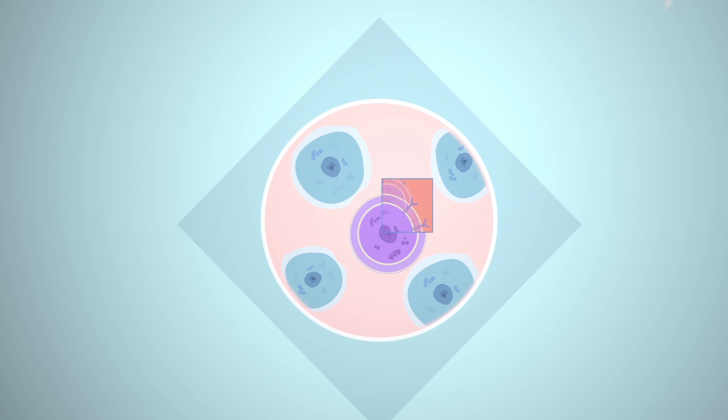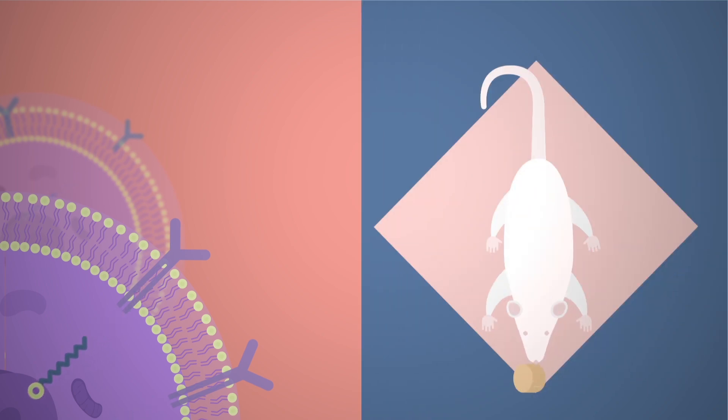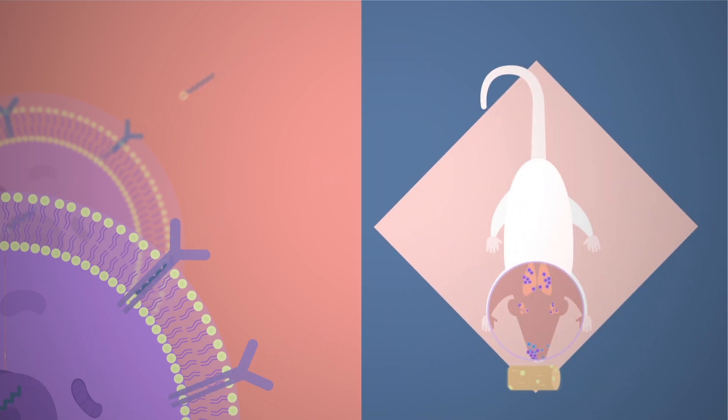Since it is known that CD36 transports fatty acids inside the cells, researchers studied the role of a fatty diet in metastasis of several oral tumors and the results show that higher fat levels in the bloodstream increased the number of metastatic spots.